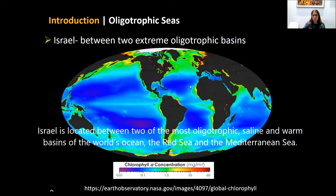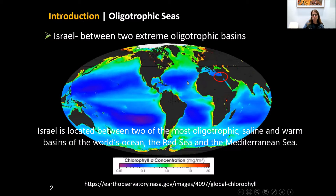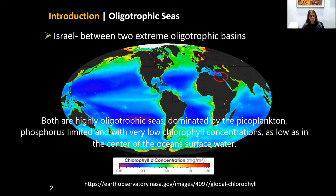This region is located between two of the most oligotrophic, saline, and warm basins of the World Ocean: the Red Sea and the Mediterranean Sea. Both are highly oligotrophic seas dominated by picoplankton, phosphorus-limited, and with very low chlorophyll concentration, as low as in the center of the ocean surface water.